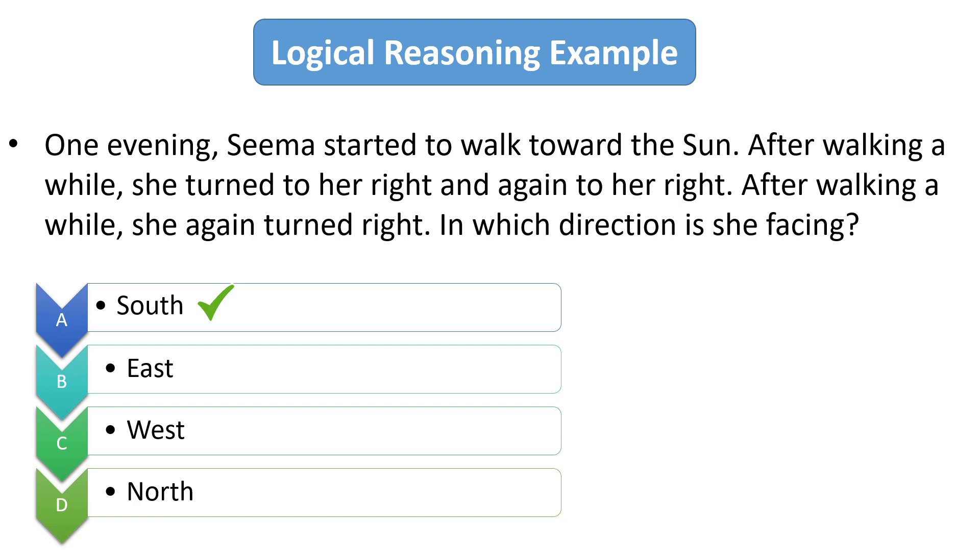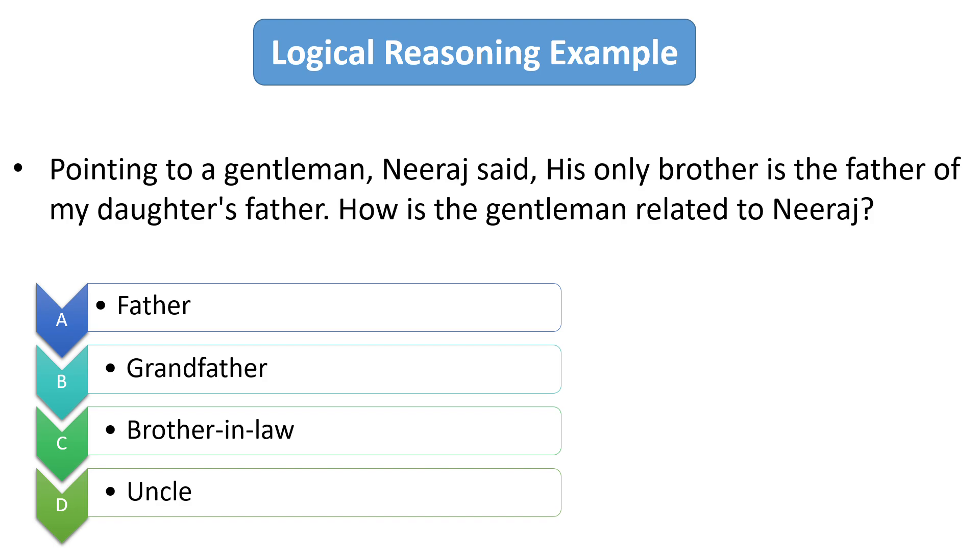Now the next question from logical reasoning is pointing to a gentleman, Neeraj said, his only brother is the father of my daughter's father. So how is the gentleman related to Neeraj? So here observe this sentence which is father of my daughter's father. Here the meaning of my daughter's father is Neeraj itself. So now the sentence will be like the father of Neeraj. So the father of Neeraj is the brother of that gentleman. So in this way the gentleman is the uncle of Neeraj. So the answer is D which is uncle.